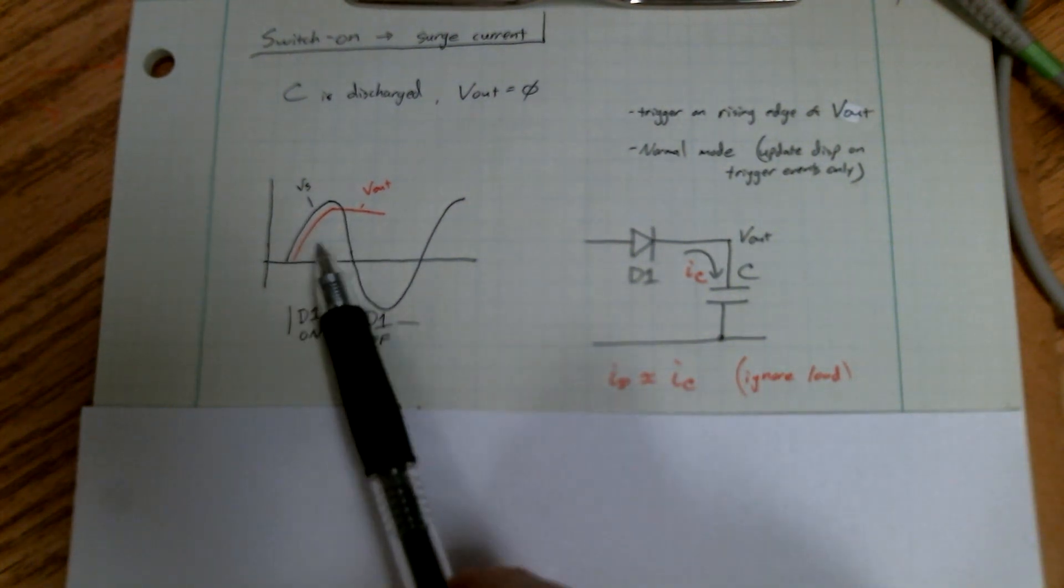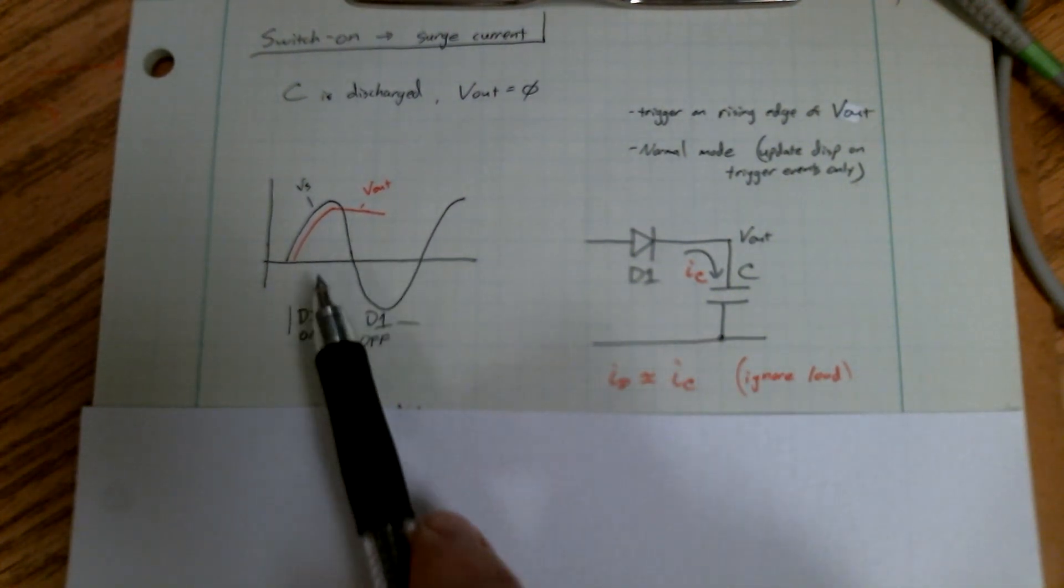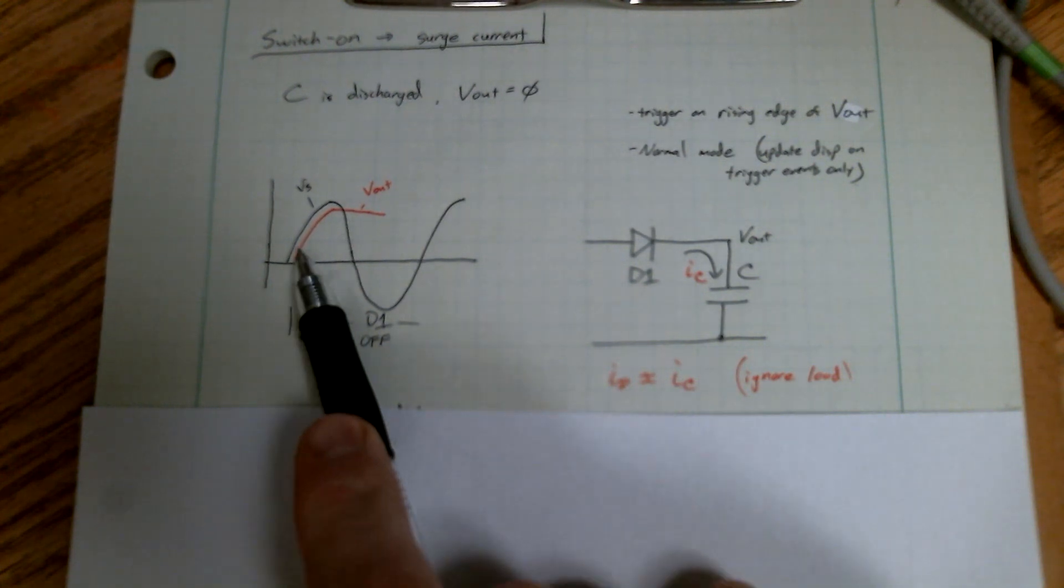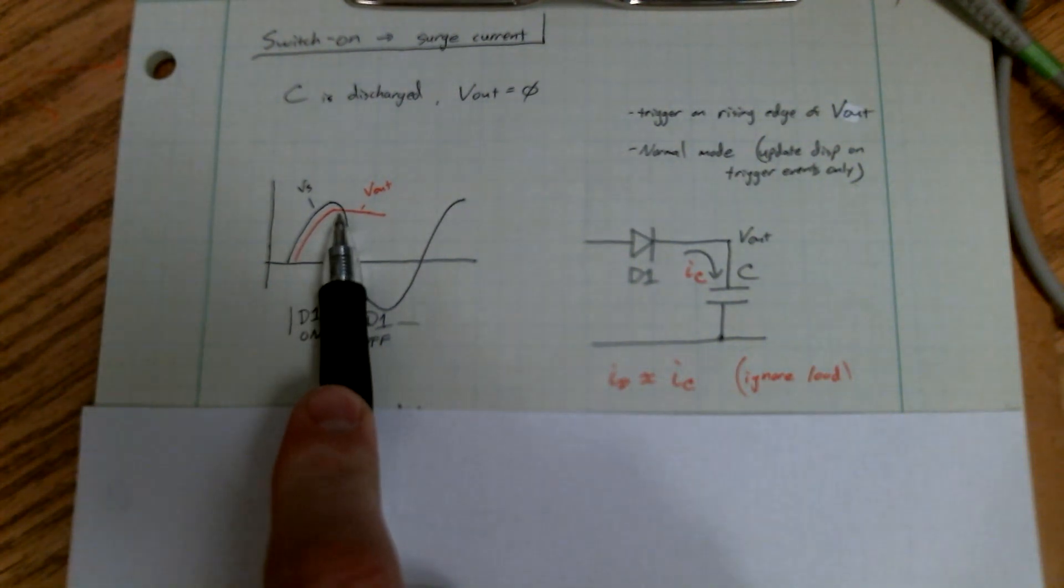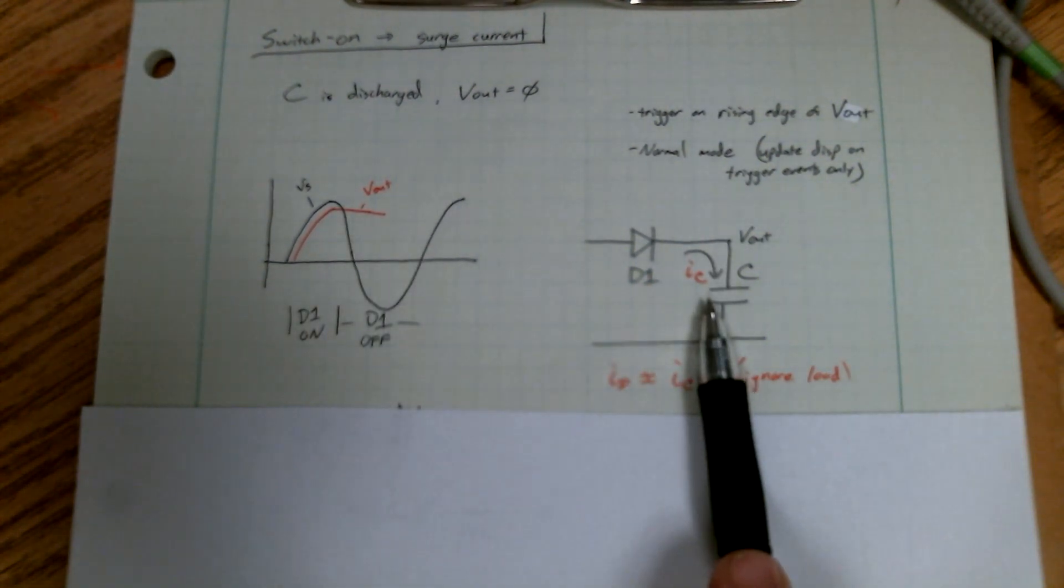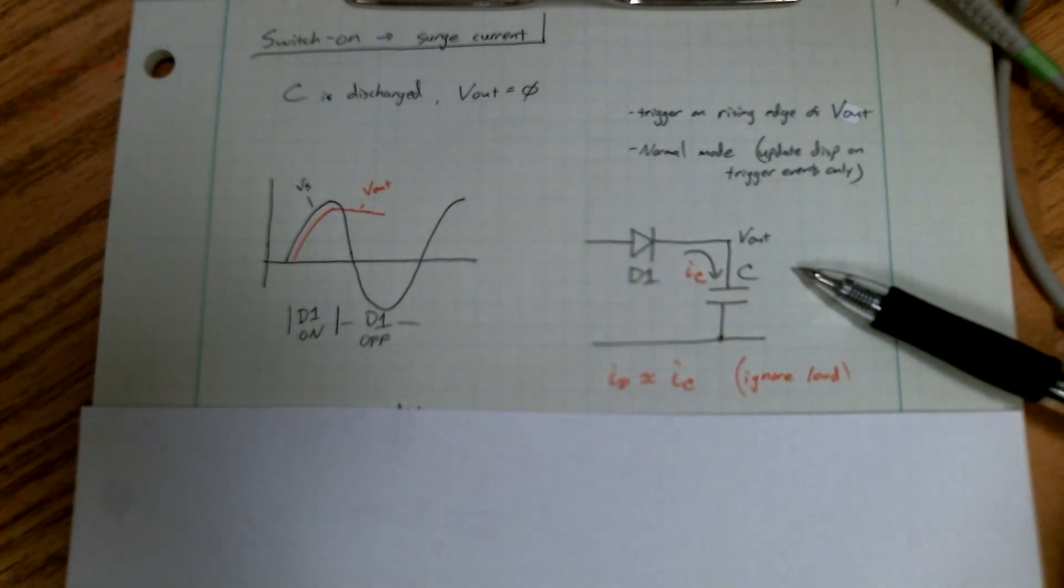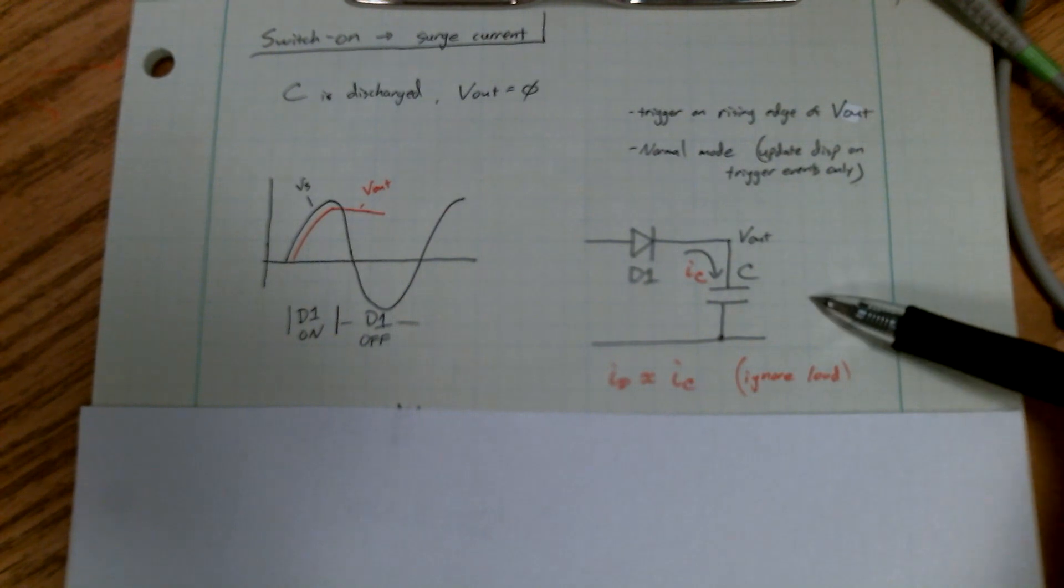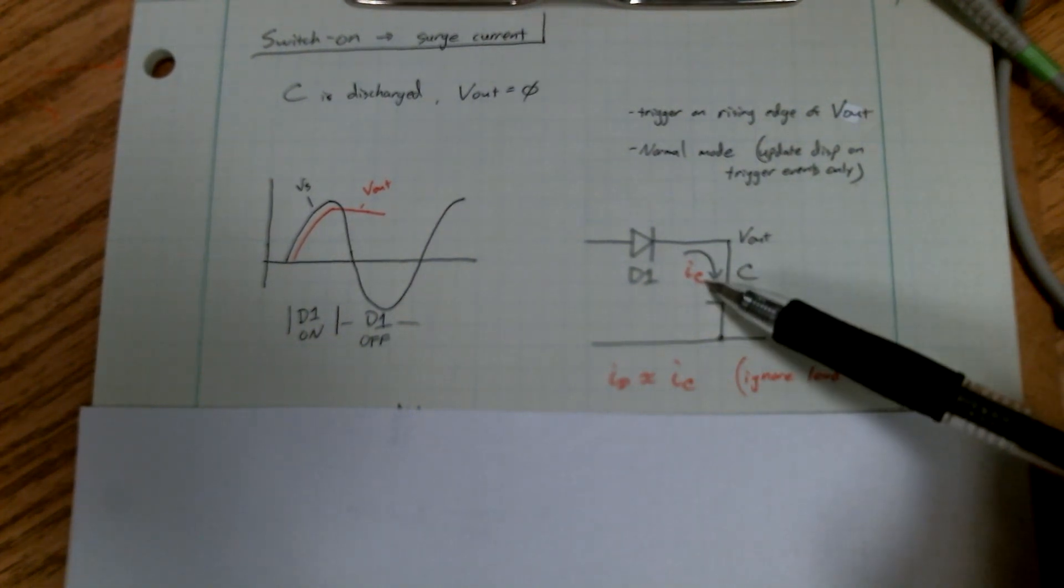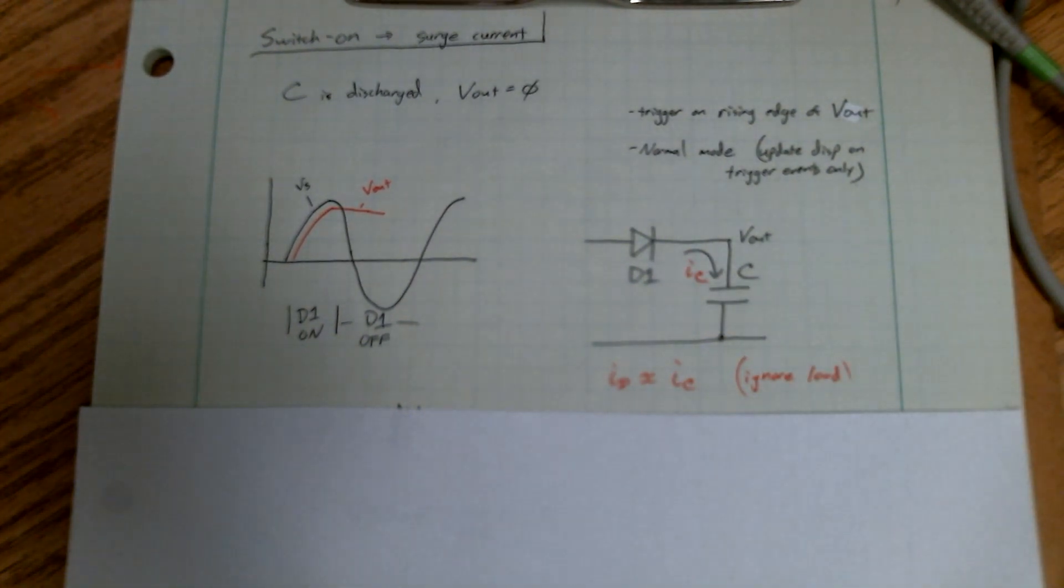VS is the secondary, and that will turn on diode number one, that top diode, and charge up the capacitor through diode one. This is the equivalent circuit that's going on. I'm going to ignore the 4 ohm resistor over here, because as we'll see, that current is really small compared to the capacitor charging current.